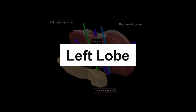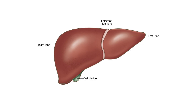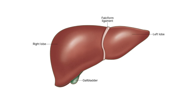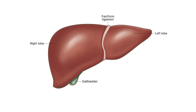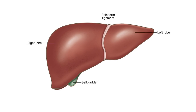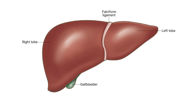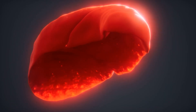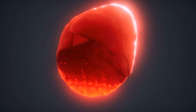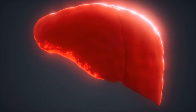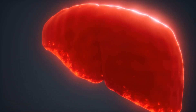Left lobe. The left lobe of the liver is smaller and is located on the left side of the body. It extends from the midline to the left side. The left lobe is further divided into the medial and lateral segments.